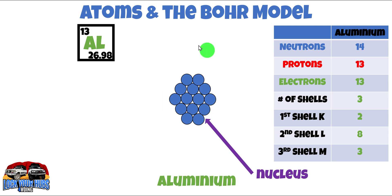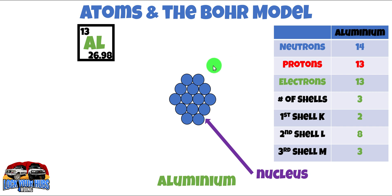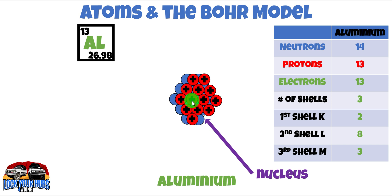The atom consists of protons, neutrons, and electrons. In the case of aluminium, it has 14 neutrons, 13 protons which are positively charged, and 13 electrons. Here's our neutrons right in the nucleus, right in the centre. And now these are our protons, our positively charged protons. The electrons actually orbit the nucleus in shells. So let's have a look at that.